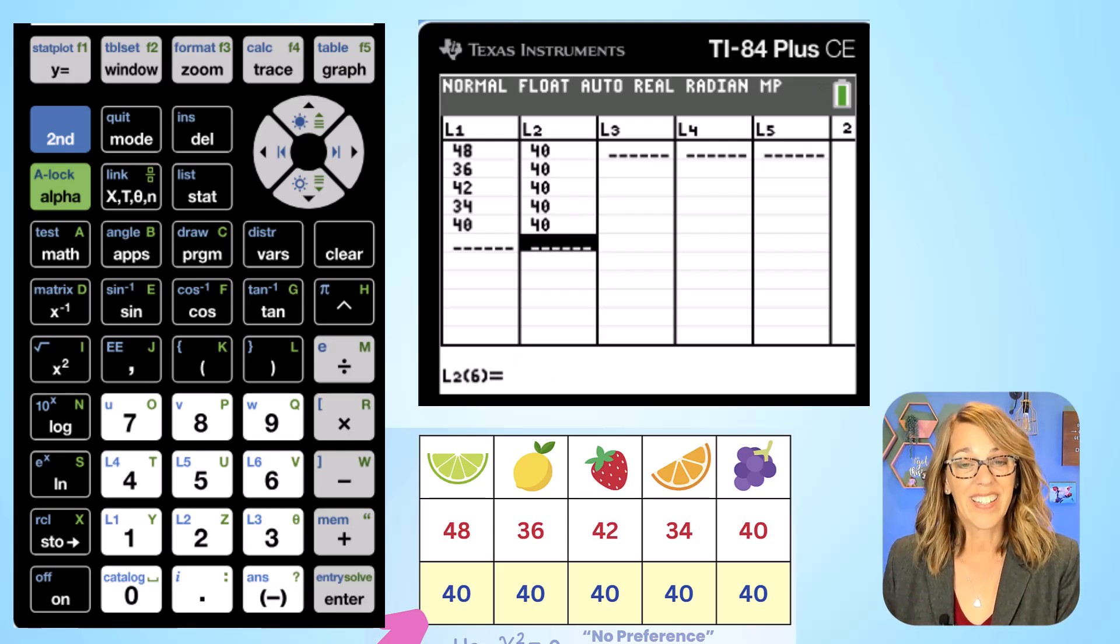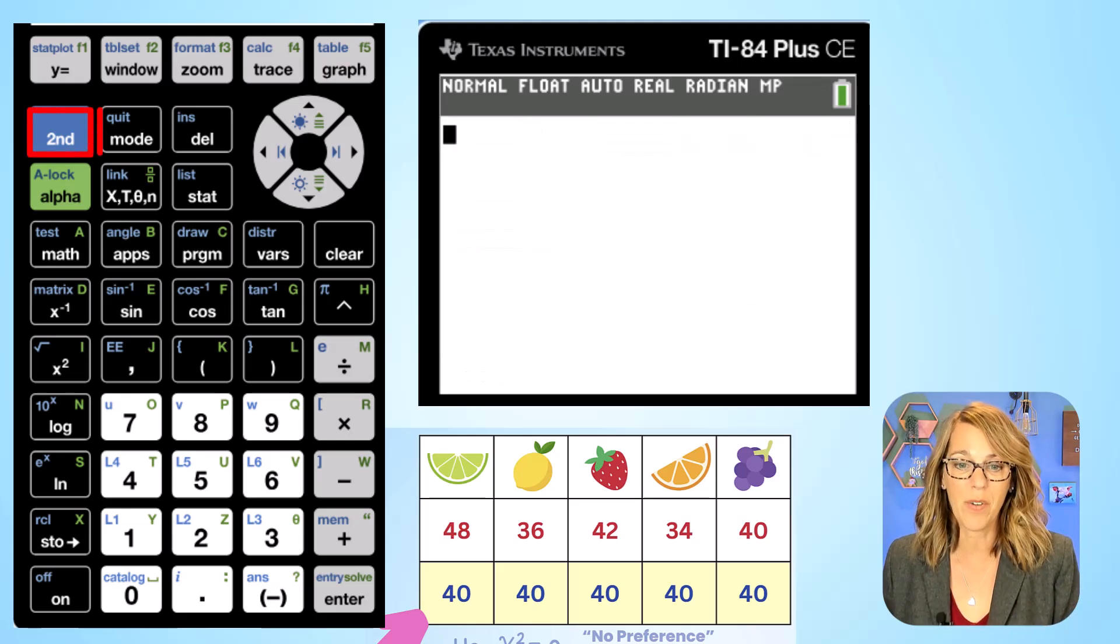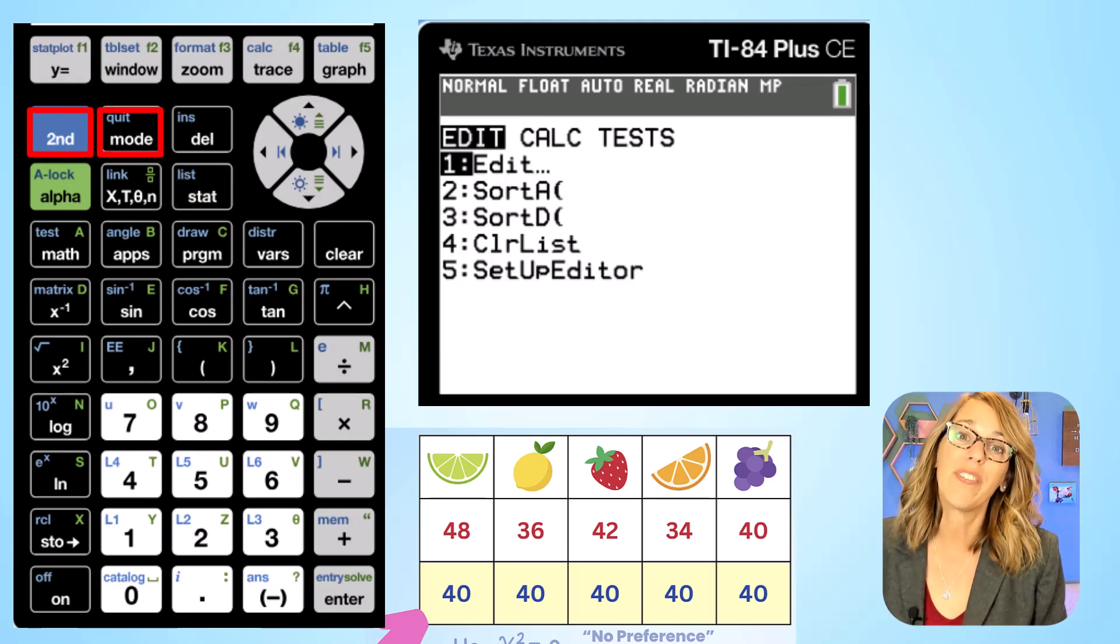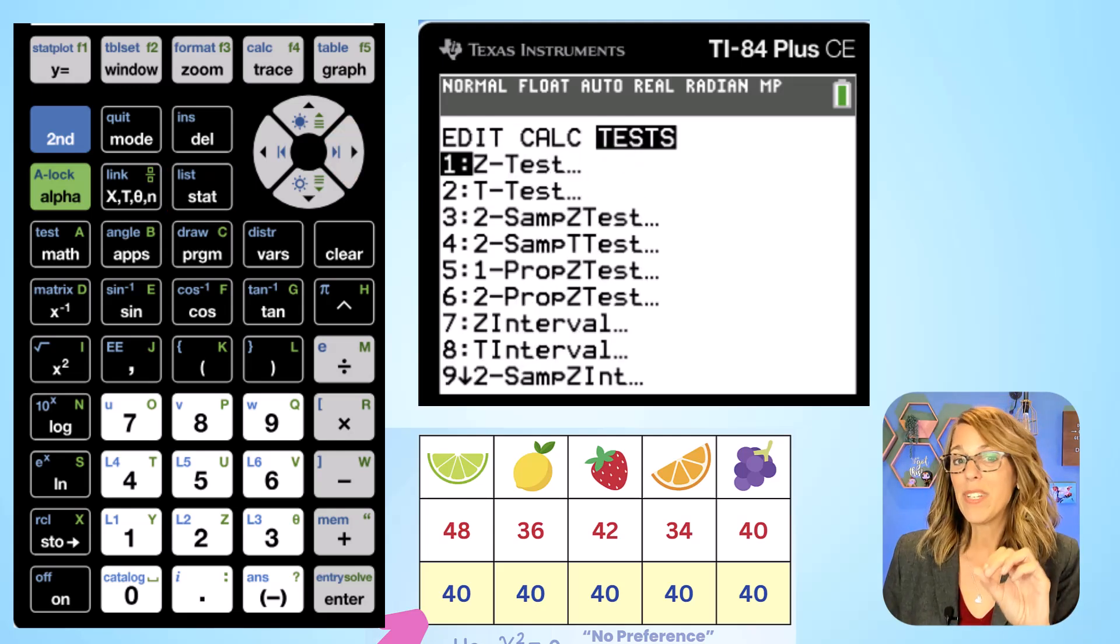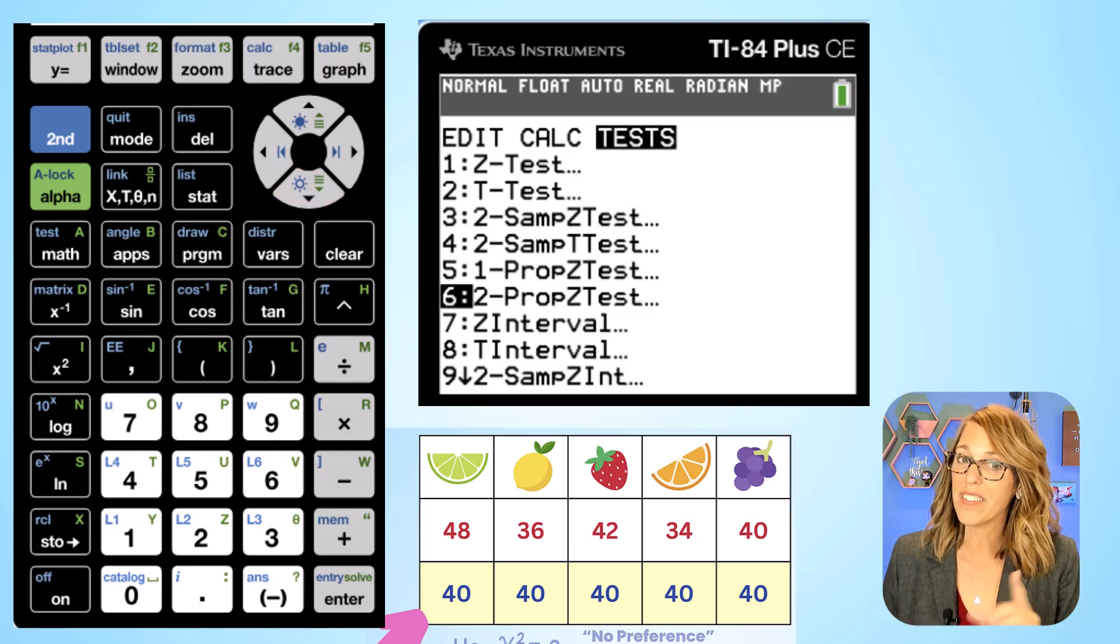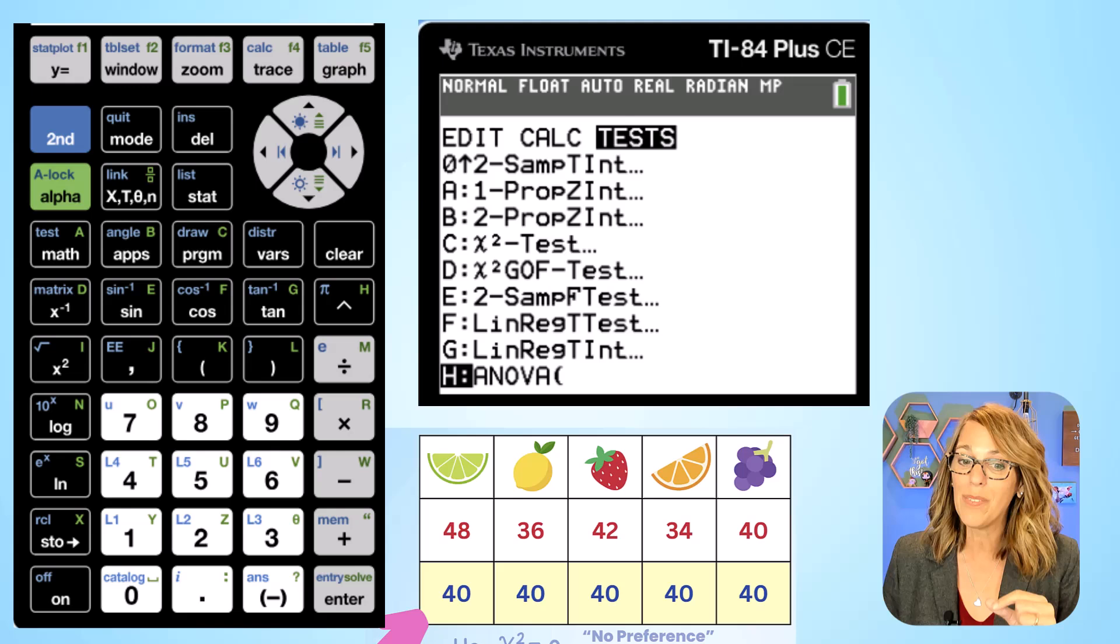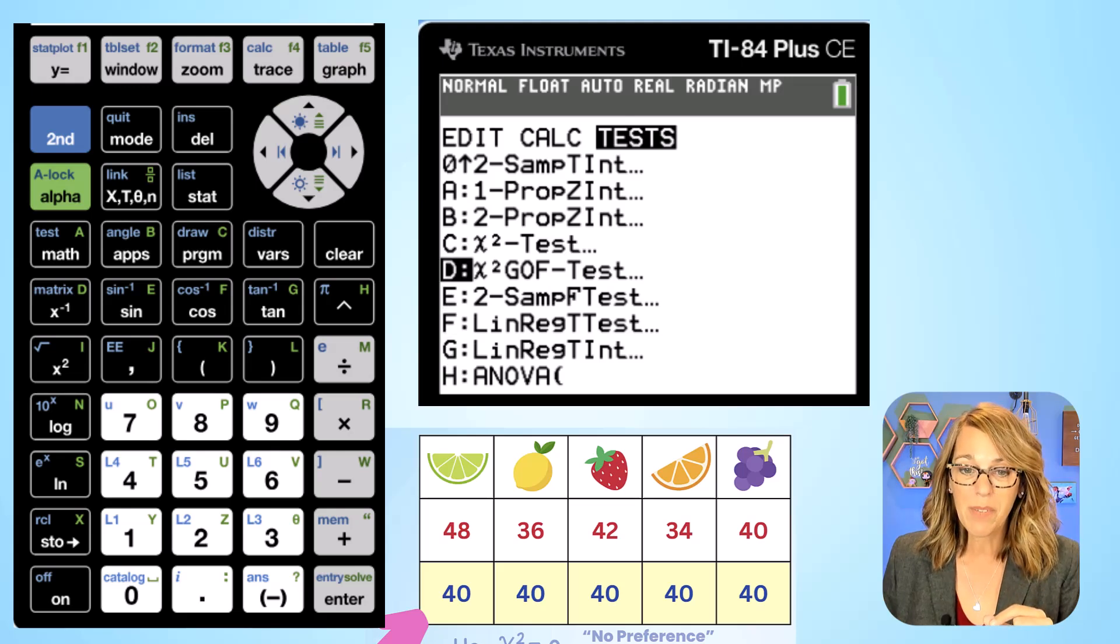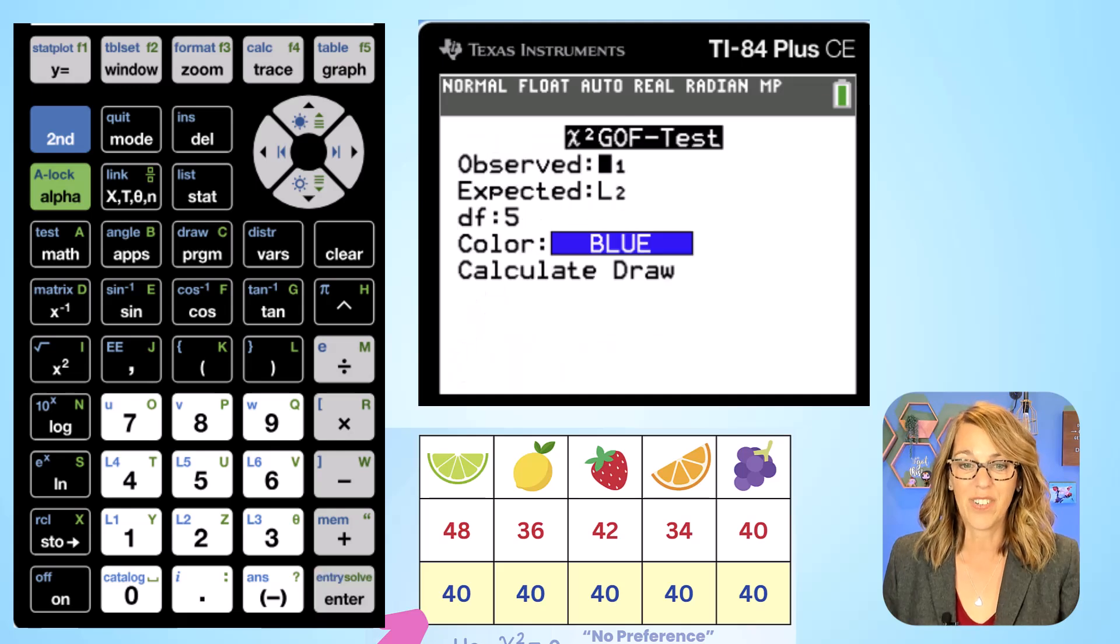And we're ready to run that test. Let's get out of our list editor by doing second followed by quit. To run the test I want to go to the stat menu and I'm going to arrow over to the tests menu. Now I'm looking for that chi-square goodness of fit. I can arrow down or I know it's towards the bottom of the list. You can also arrow up which is a little bit quicker. Mine happens to be here in D, that chi-square goodness of fit GOF test. Let's hit enter.